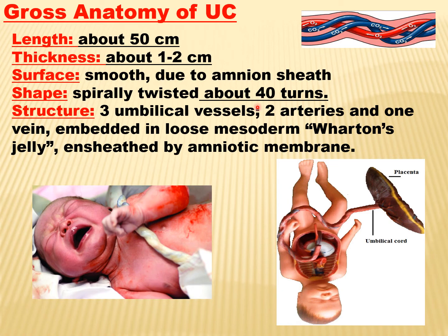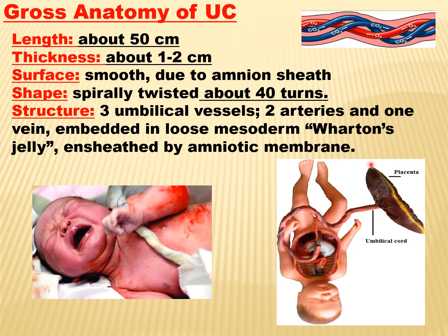The twisting is due to the umbilical vein being shorter than the two arteries, causing the umbilical cord to form about 40 turns. The structure includes three umbilical vessels — two arteries and one vein — embedded in loose mesoderm called Wharton's jelly, enclosed by the amniotic membrane. This is the umbilical cord showing normal twists.